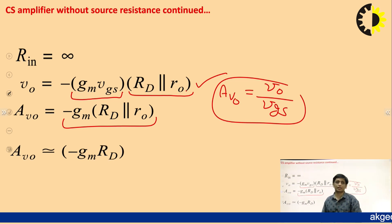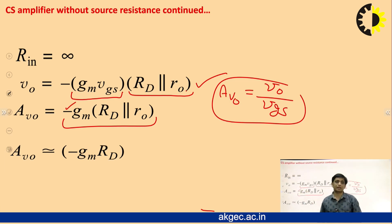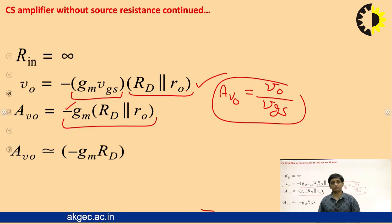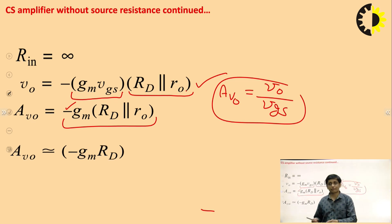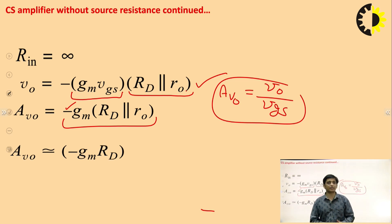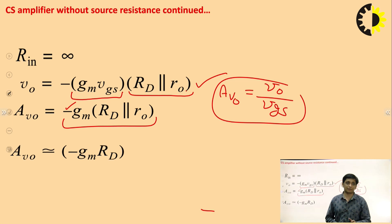In the expression of the voltage gain, the negative sign has significance: negative voltage gain means the output is 180° out of phase with the input. That is why the common source amplifier is referred to as an inverting amplifier. In the case of common gate and common drain, the voltage gain is positive, so those are non-inverting amplifiers. But the common source amplifier is the inverting amplifier — just like the common emitter amplifier in BJT.